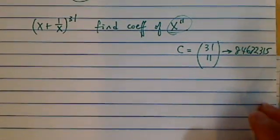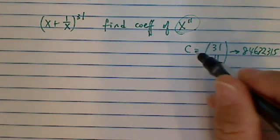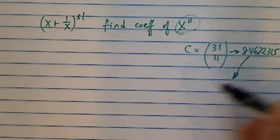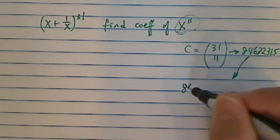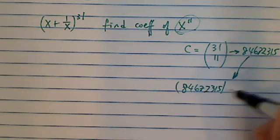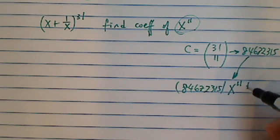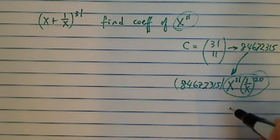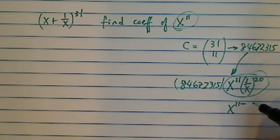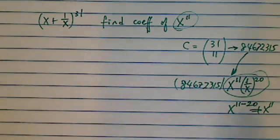But the problem is once you plug this in, you'll notice that this expansion says x to the 11th, so it's this number 84,672,315 times x to the 11th, then 1 over x to the 20th term. But if you were to combine this one, this x^11 minus 20, this is not equal to x to the 11th term.